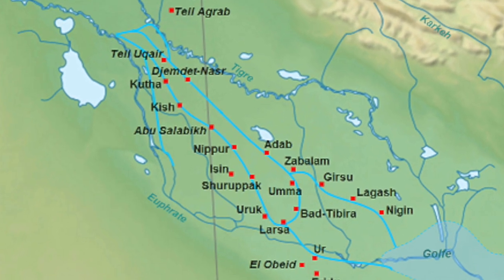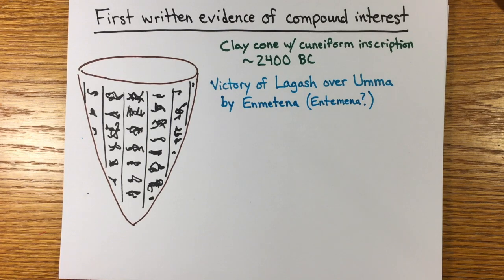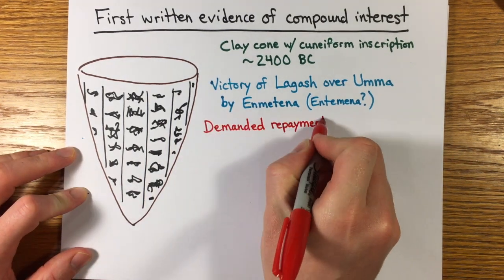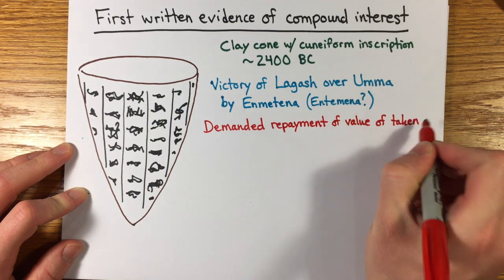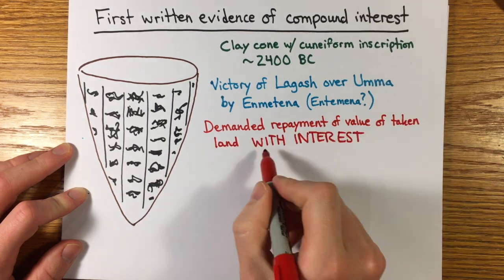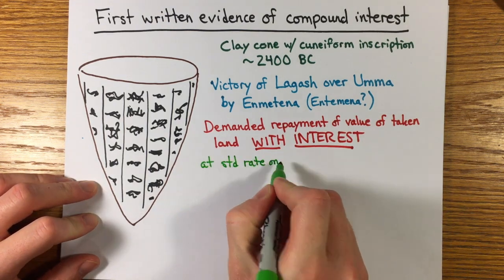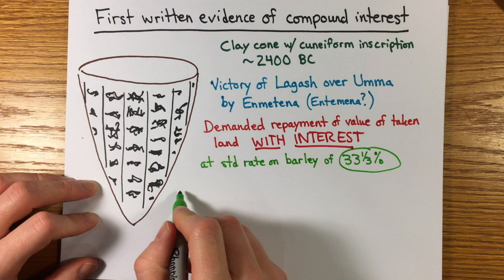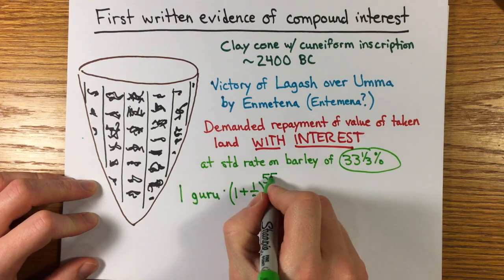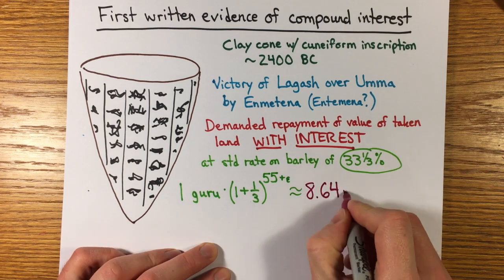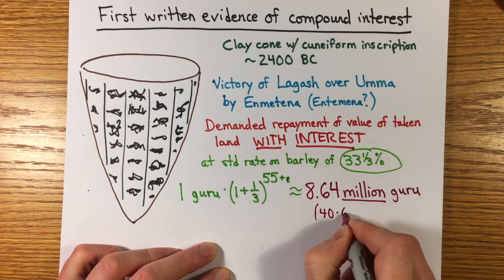Apparently, Umma had taken from Lagash a valuable strip of fertile land some two generations before. The army of Lagash killed the leader of Umma, and Enmetena demanded that his conquered foes repay the value of the land they had taken with interest. The land produced one guru of barley in their units. So at the rather high rate of one-third, or 33 and a third percent interest, compounded annually for 55 years and a few months, he arrived at the round figure of 8.64 million guru.